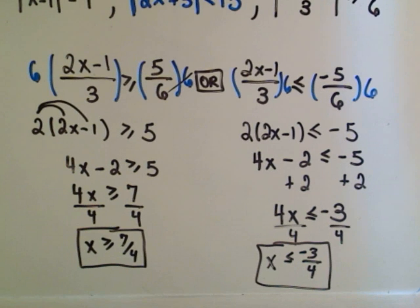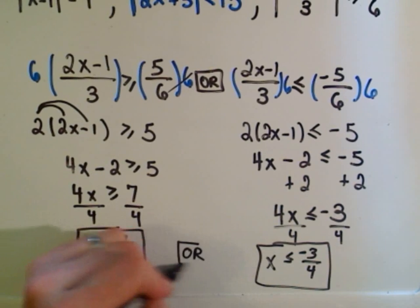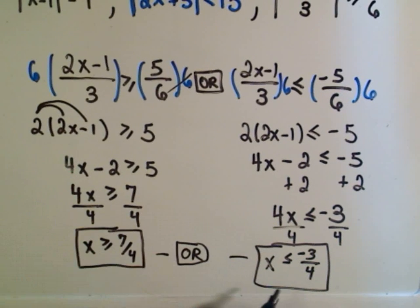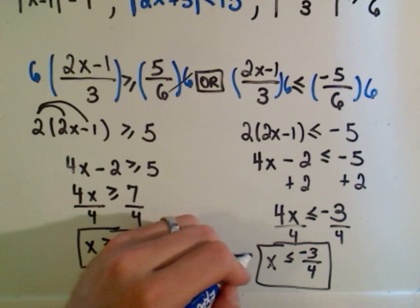Either x has to be a number greater than or equal to 7 fourths, or it has to be a number less than or equal to negative 3 fourths. One or the other.